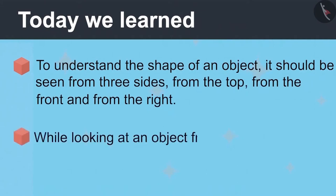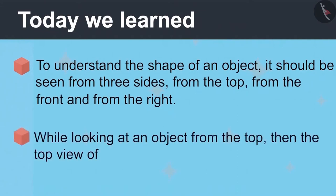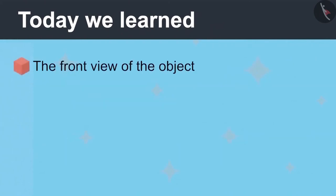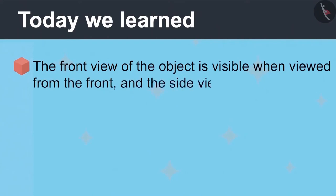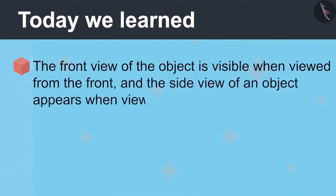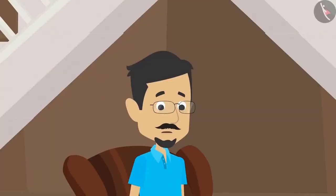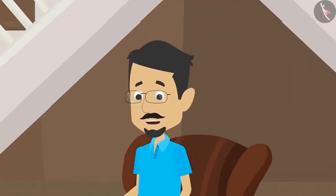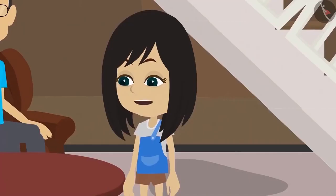While looking at an object from the top, the top view of the object appears. The front view of the object is visible when viewed from the front. And the side view of an object appears when viewed from the right side. Now you both play and I'll do my work. We will go and play and we'll tell everyone about 3D in school tomorrow.